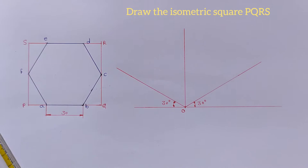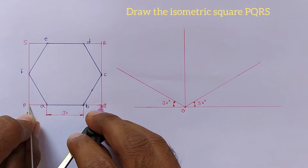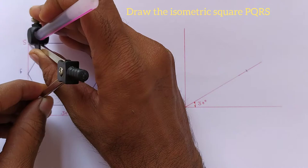Now we should draw the isometric square on this isometric lines. First I will take this distance PQ and mark on this line. Similarly vertical distance on vertical line.